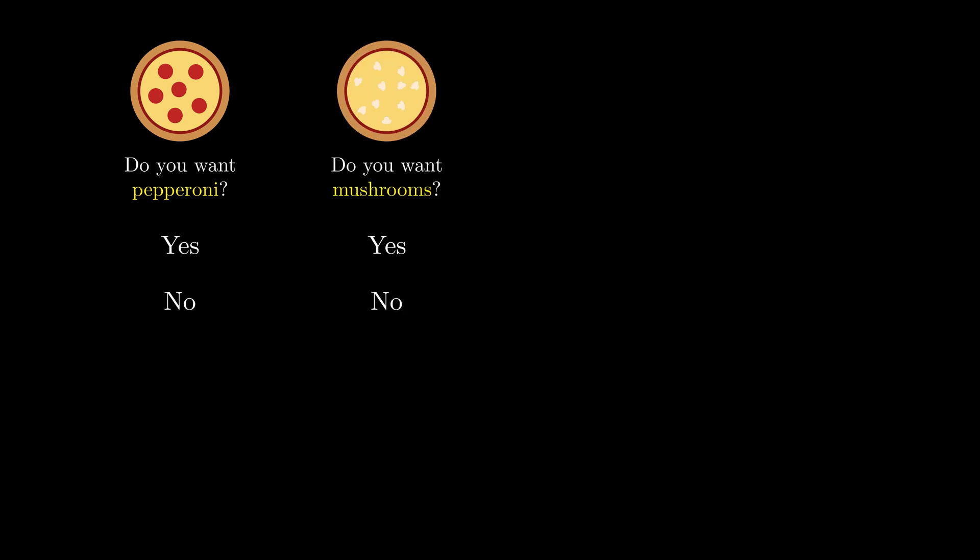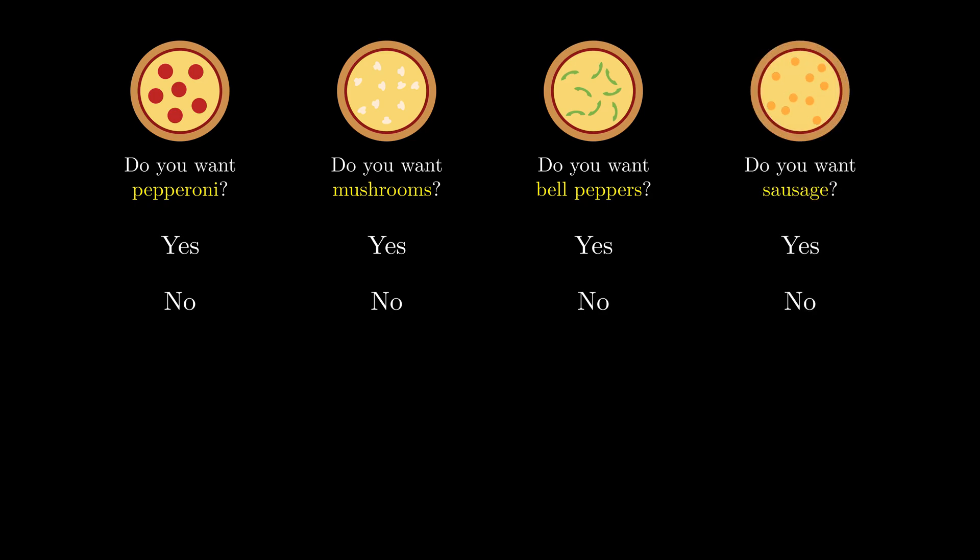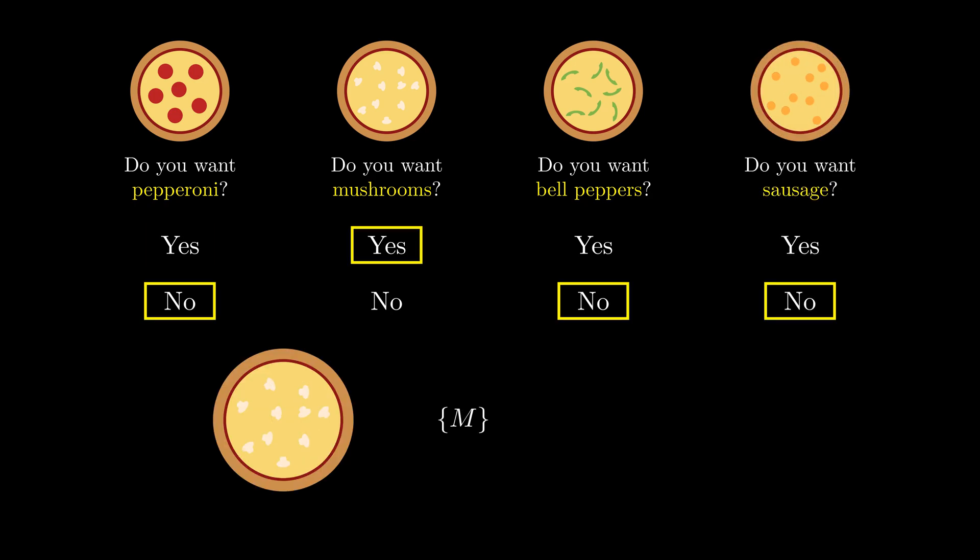There's actually another way to solve this problem. Let's go through each of the toppings one by one. For each topping, I'll ask a simple question: do you want it? For pepperoni, you have two choices, yes or no. For mushrooms, you also have two choices, yes or no. Each topping gives you two options, and all of these choices together decide which pizza you want.